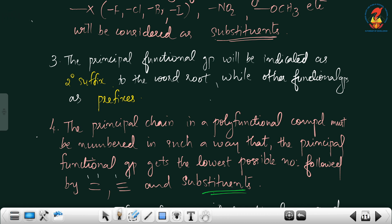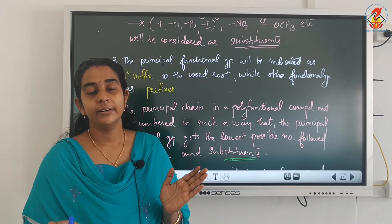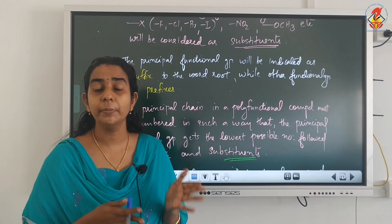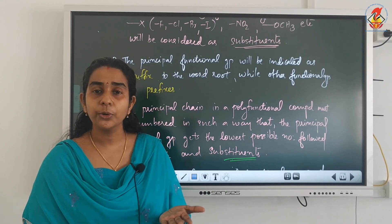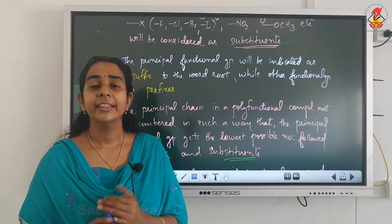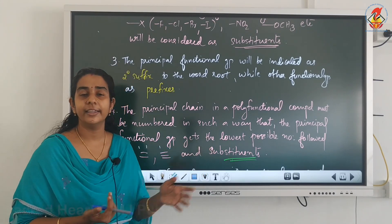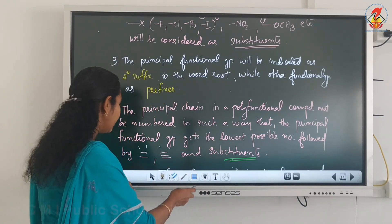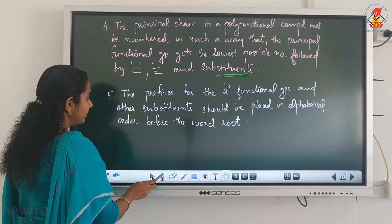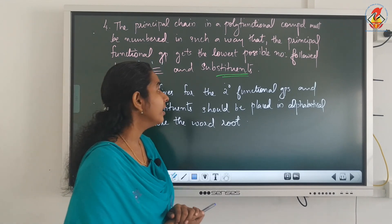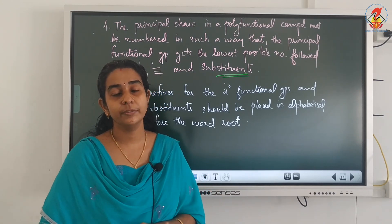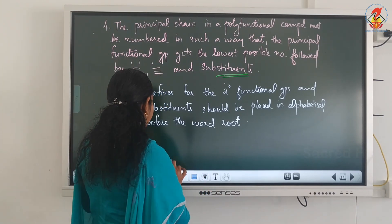Substituents have the least priority in numbering. Substituents such as halogens — which are functional groups but treated as substituents — nitro group, and alkyl groups: if they are getting higher numbers, no problem. Also, the prefixes for secondary functional groups and other substituents should be placed in alphabetical order.